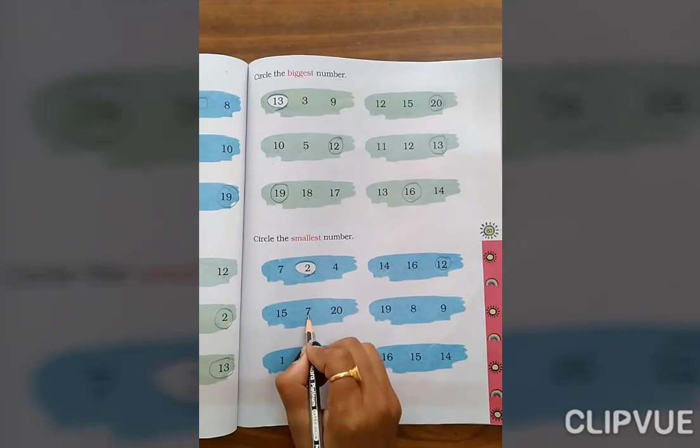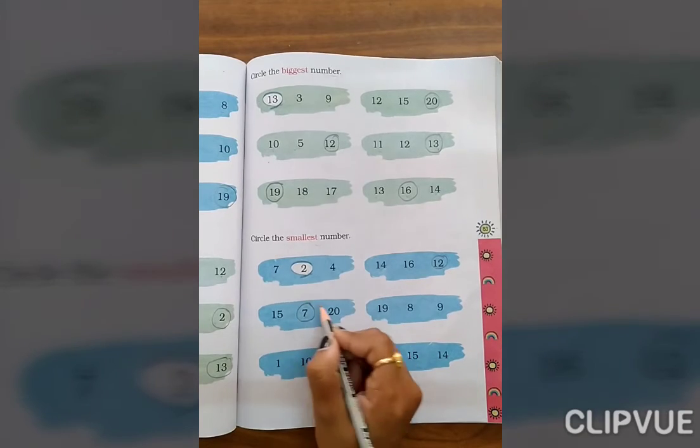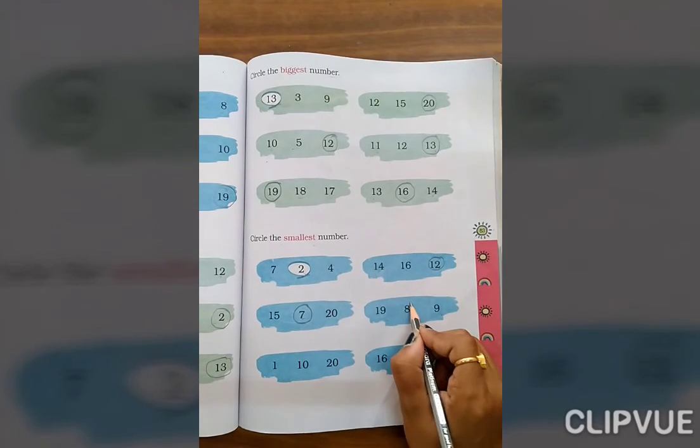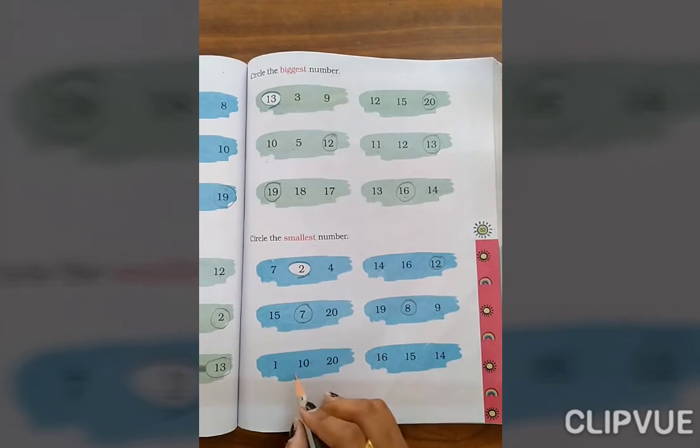15, 7, 20. Then smallest is 7. 19, 8, 9. Smallest number, 8.